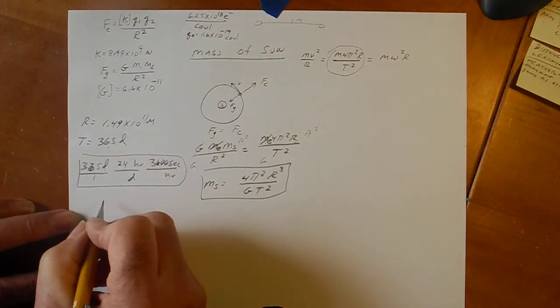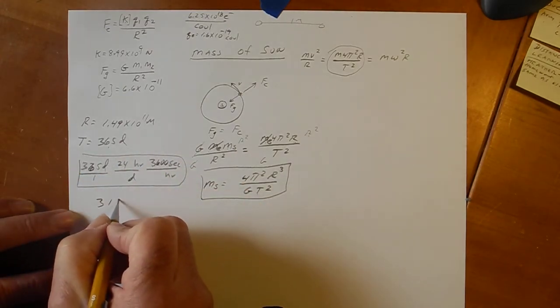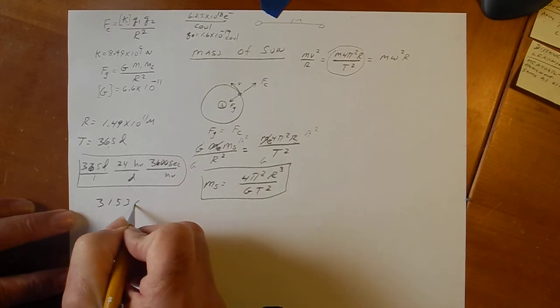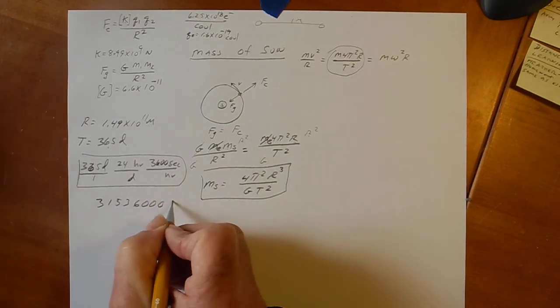Figure this out. Okay. This number is, I previously figured it out. It's 1, 3, 1, 5, 3, 6, 0, 0, 0 seconds. Okay.